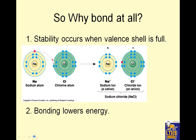So why do things bond at all? Stability occurs when the valence shell is full, and bonding lowers the energy — those are two reasons why you bond. If you look at sodium, it has one valence electron. If it gives it to chlorine, chlorine has seven and will become full — eight is typically full. So seven goes to eight, and sodium goes from one to eight as well. Bonding lowers energy.